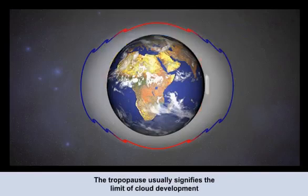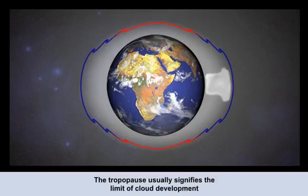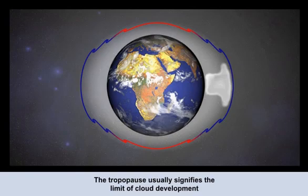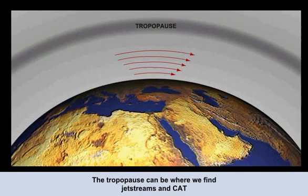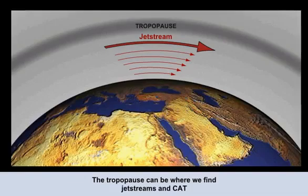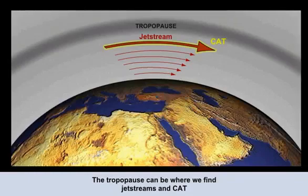Why is the tropopause so important to us? The tropopause signifies the start of a marked temperature inversion, which effectively limits the vertical movement of air and clouds within our atmosphere. It usually signifies the limit of cloud development. As a result of very low densities in the upper atmosphere, the upper winds tend to be very strong and in some cases form narrow bands called jet streams. These can be beneficial if our flight goes in the same direction, but they also carry a likelihood of significant turbulence — called clear air turbulence, or CAT.